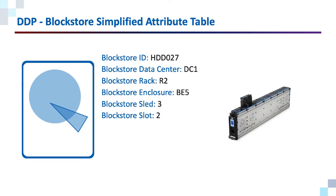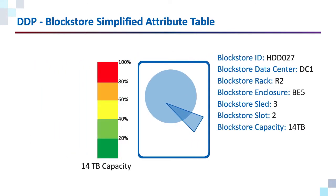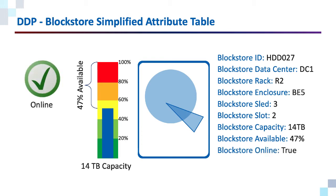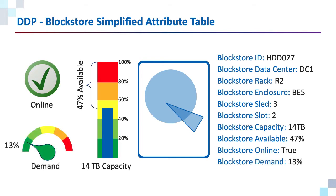But there are more attributes. We know the capacity of that block store, and of that capacity, how much is available. We want to maintain an even distribution of data across all block stores, so we need to make sure the block stores are filling up somewhat uniformly. We know if the block store is online — a block store can be offline for various reasons; it doesn't necessarily mean a failure, but to write to that block store, we need it to be online. We also know the demand on that block store. In this example, the block store has a demand of 13%, meaning it is participating in IO 13% of the time. This is important because we want to avoid creating IO hotspots.